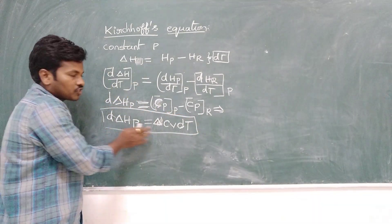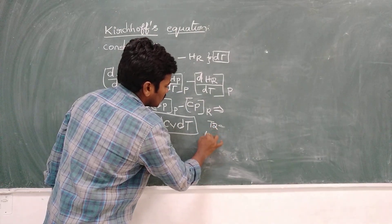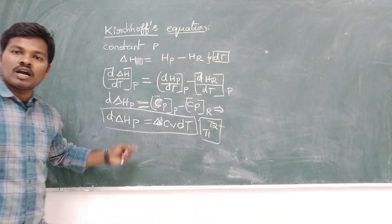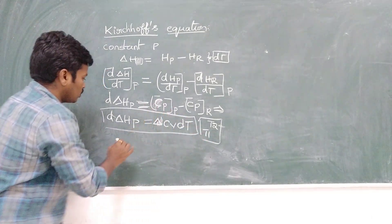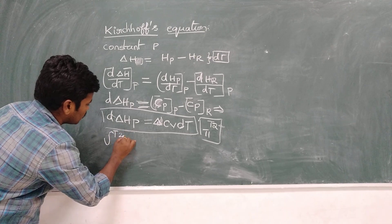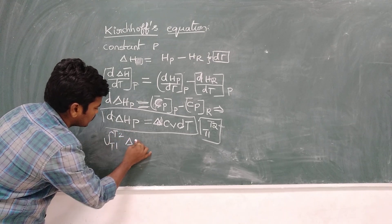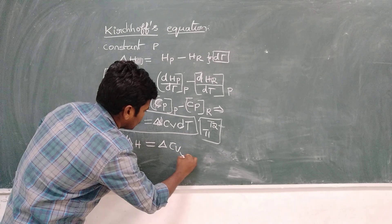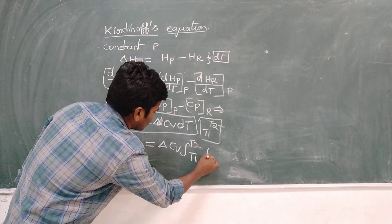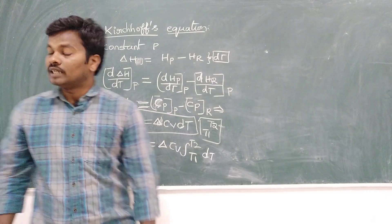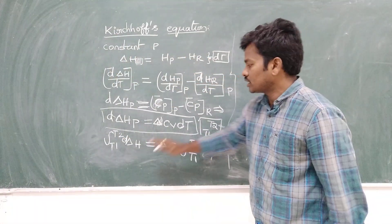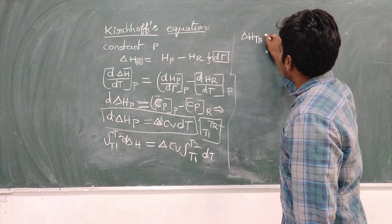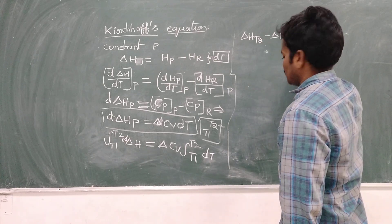Next, integrate these equations with respect to temperature between T1 and T2. First we did differentiation; second we do integration between the limits T1 and T2. So integrating: ∫(from T1 to T2) D(ΔH) = ∫(from T1 to T2) ΔC_P · dT. After doing the integration, we can write: ΔH(T2) − ΔH(T1) = ΔC_P · (T2 − T1).